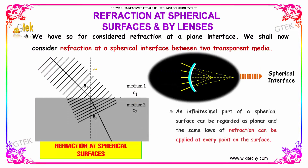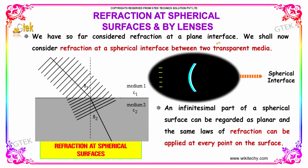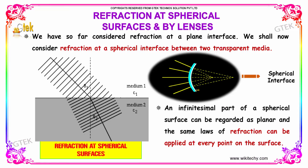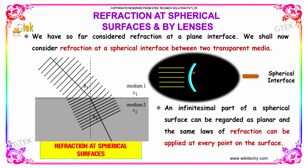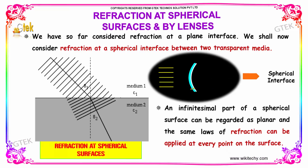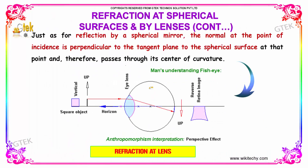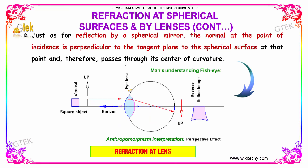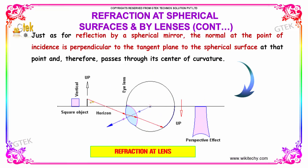We have so far considered refraction at a plane interface. We shall now consider refraction at a spherical interface between two transparent media. An infinitesimal part of a spherical surface can be regarded as planar and the same laws of refraction can be applied at every point on the surface. Just as for reflection by a spherical mirror, the normal at the point of incidence is perpendicular to the tangent plane of the spherical surface at that point and therefore passes through its center of curvature.